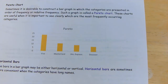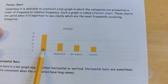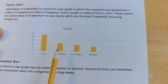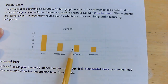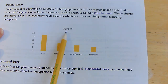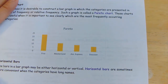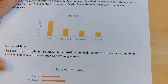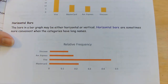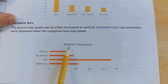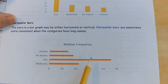A Pareto chart does the same thing — it shows the frequencies, the number of people in each category out of the 50 — but you'll notice they're listed from largest to least, and that's what makes it a Pareto chart. Horizontal bars work the same way as well; you can display relative frequency or frequency, just listed horizontally.